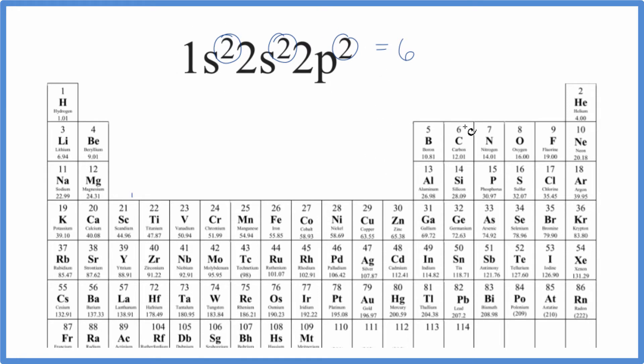We can see carbon, its atomic number is six. That means it has six protons, since it's neutral, six electrons, and the electron configuration for carbon is going to be 1s2, 2s2, 2p2.